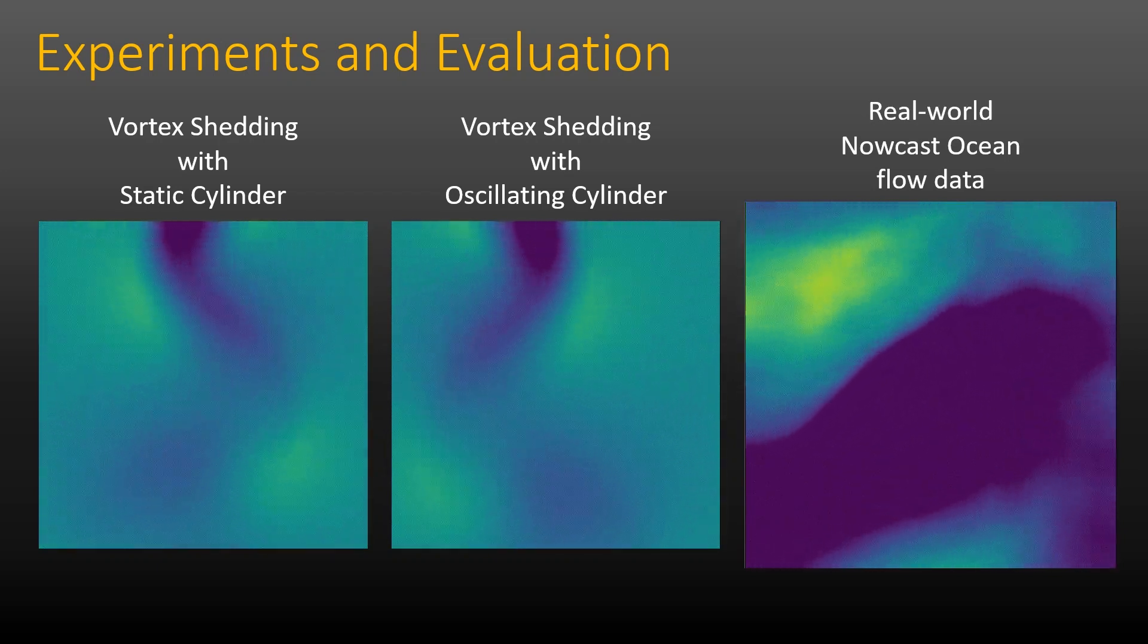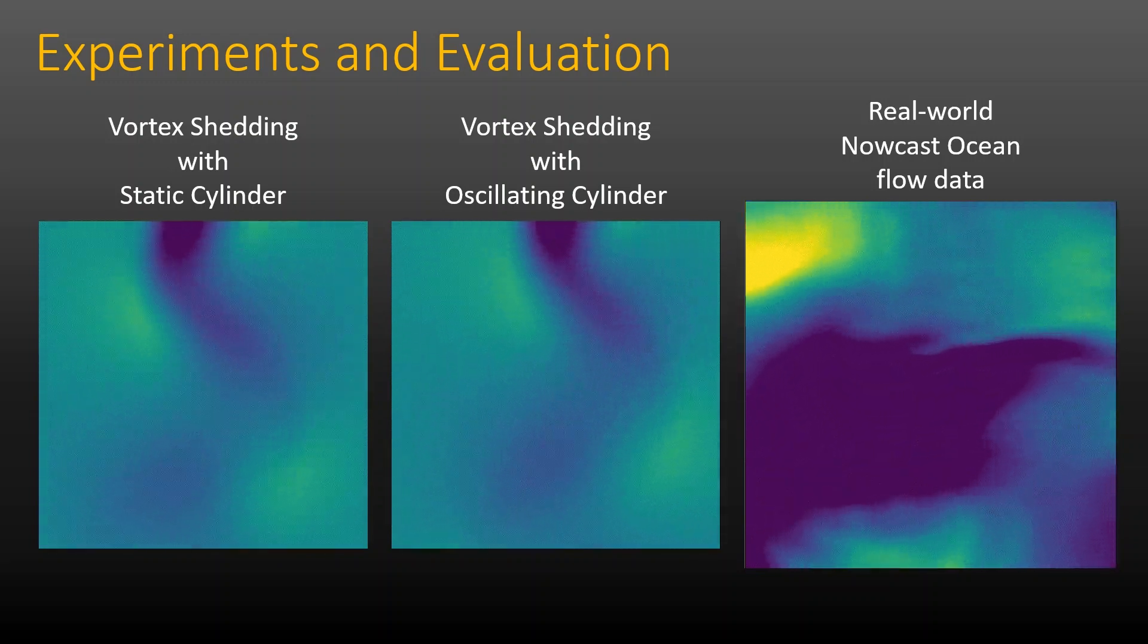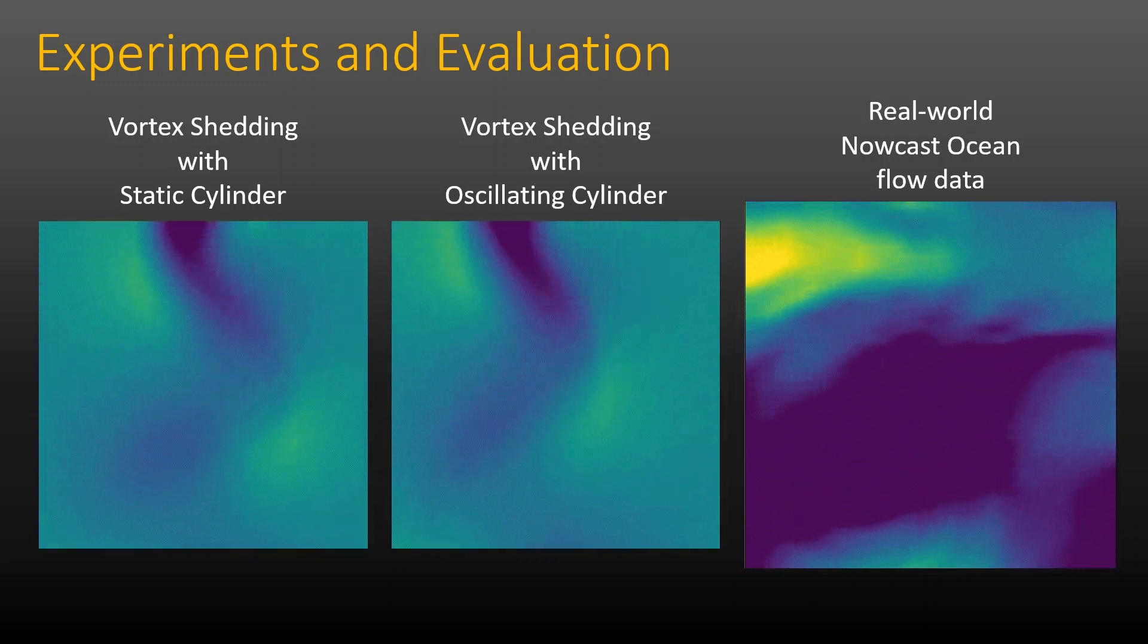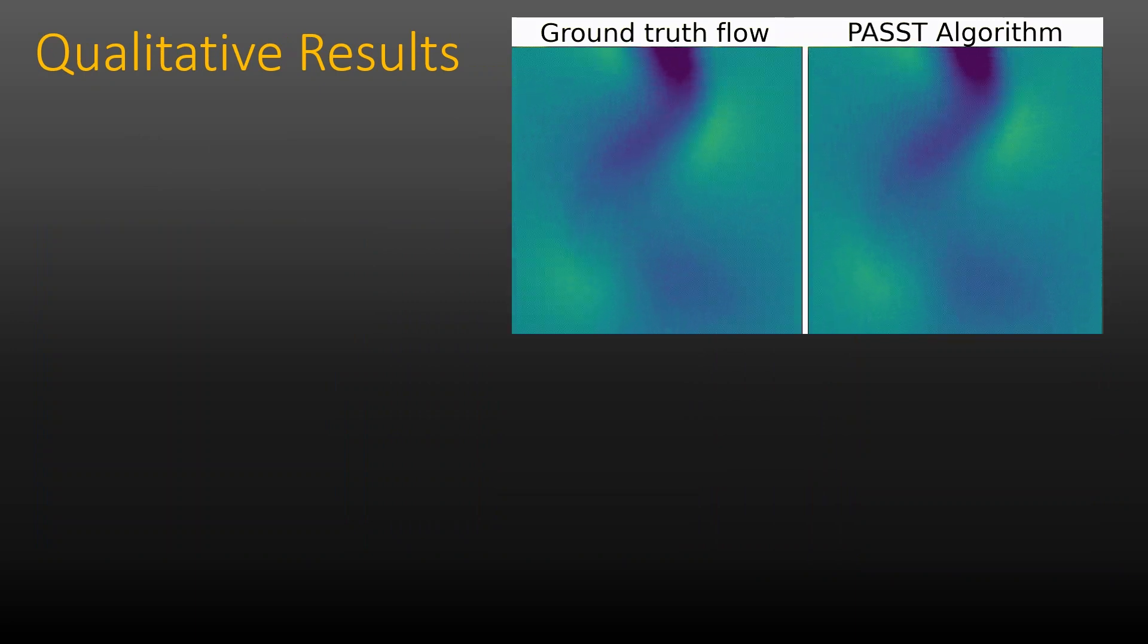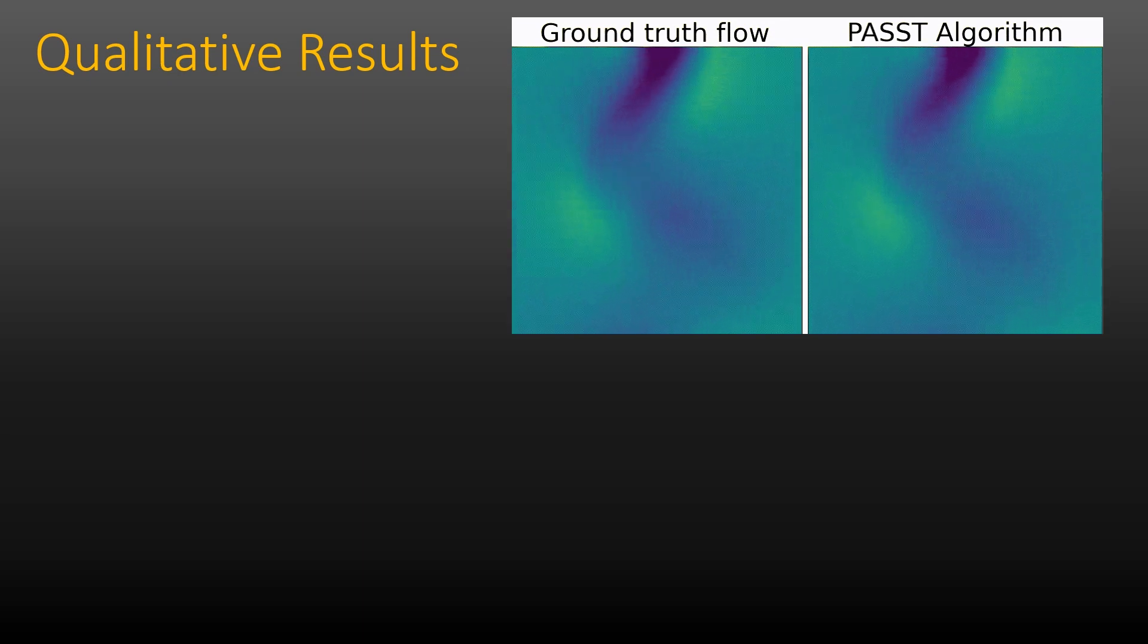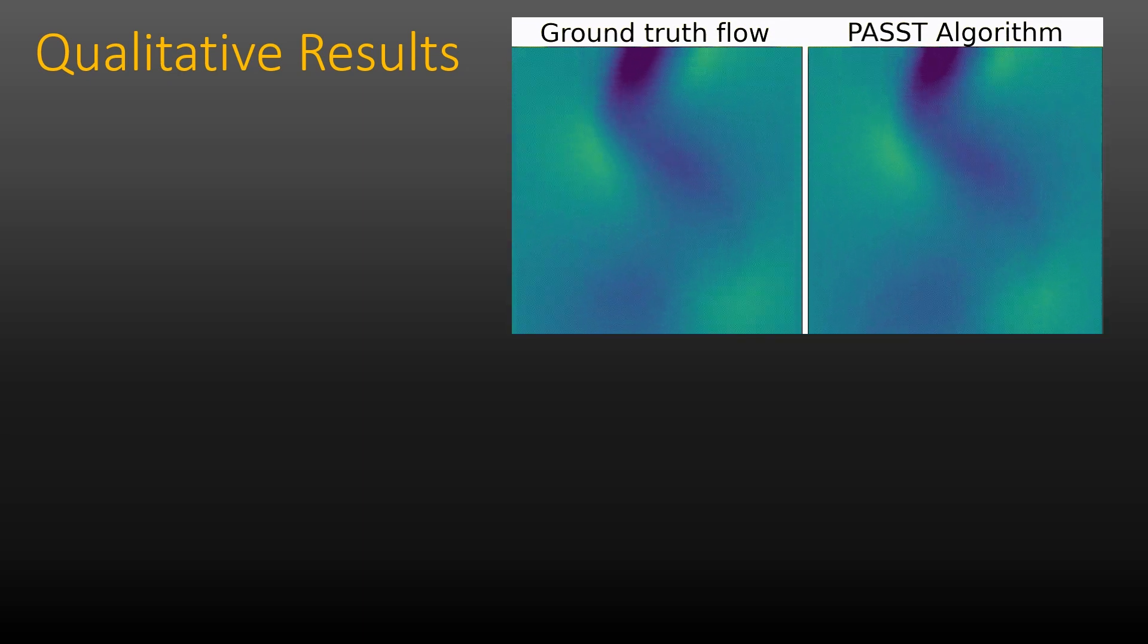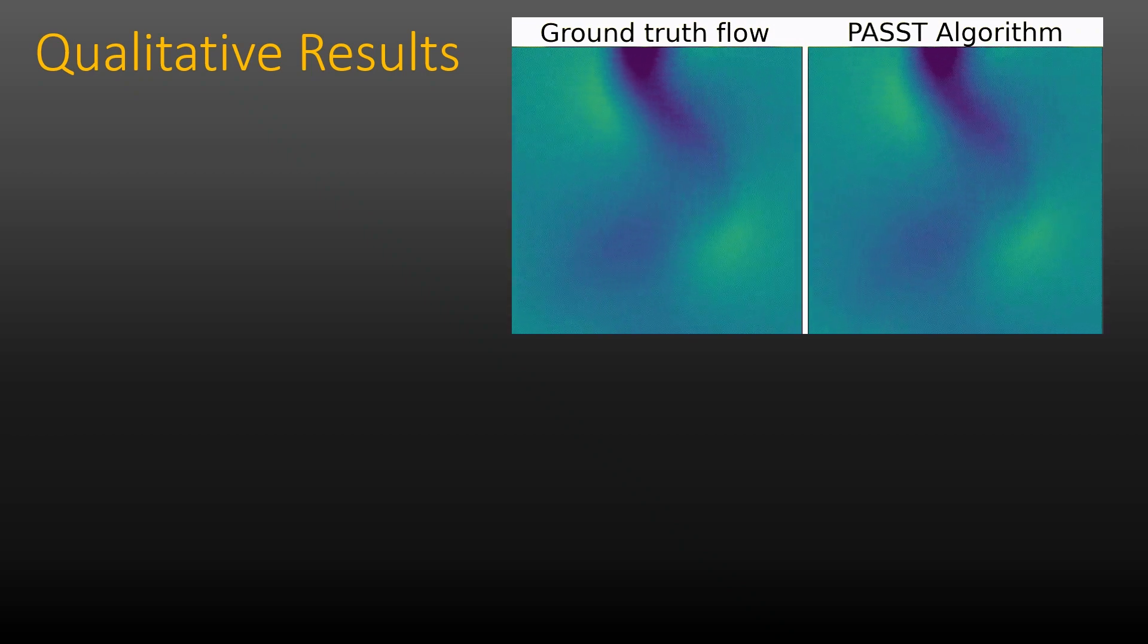To demonstrate sampling efficiency over long time horizons, we compare the results with baseline sampling methods. The qualitative results are shown by reconstructing the spatio-temporal field. As illustrated, our algorithm is capable of sampling and modeling the spatio-temporal field efficiently and accurately.